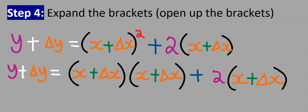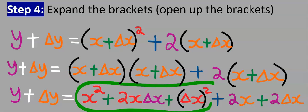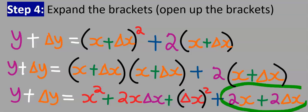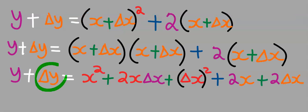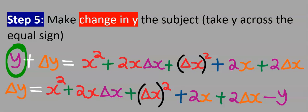Step number four: expand the bracket. Since it is squared, there are going to be two terms when you expand this bracket. After expanding, you get the expanded form. Step number five: make Δy the subject by leaving Δy on this side and moving y over to the other side of the equal sign so it becomes minus y.